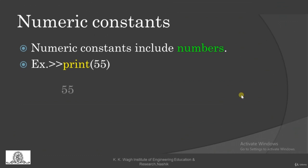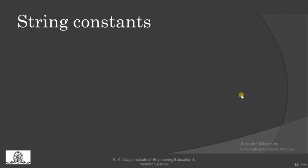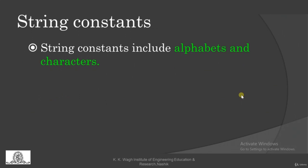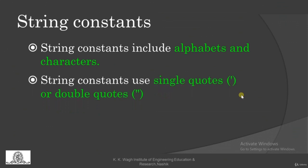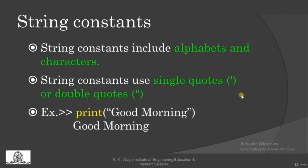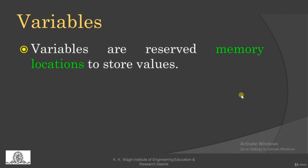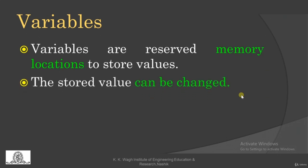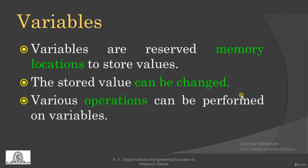Next, 101.8 — its value will be printed on the output side. The second type is string constants, which include alphabets and characters. For example, in the last session, we printed 'Welcome to Python programming' — that was a string constant. They use single or double quotes. Variables are the reserved memory locations to store values. The stored value can be changed, and various operations can be performed on variables.